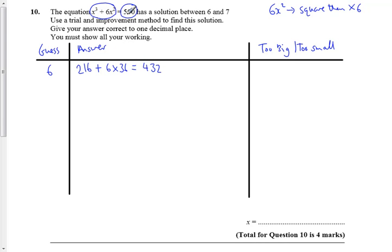Adding that together I get 432. I'm aiming for 500 so I'm too small. I'm going to go up to my guess of 7 and I'm just going to do it all in one go now. I'm not going to break it up into parts, I'm just going to write the answer in. Check you know how to use your calculator. 7³ + 6 times 7² and I get the answer 637. So I'm now too big. This is my first sandwich.